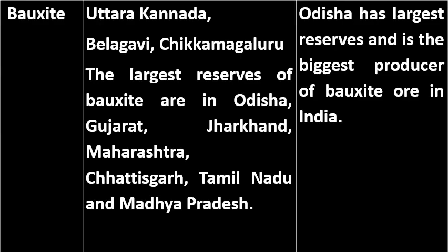Bauxite is found in Karnataka in places like Uttara Kannada, Belagavi and Chikkamagaluru. The largest reserves of bauxite are in Odisha, Gujarat, Jharkhand, Maharashtra, Chhattisgarh, Tamil Nadu and Madhya Pradesh. Among these states, Odisha has the largest reserves. Bauxite is the main raw material in the production of aluminium.